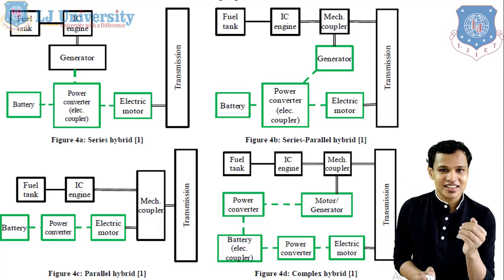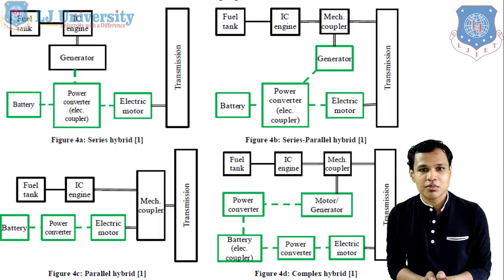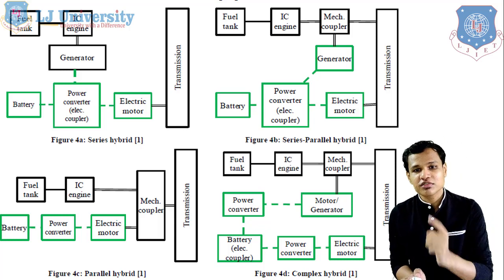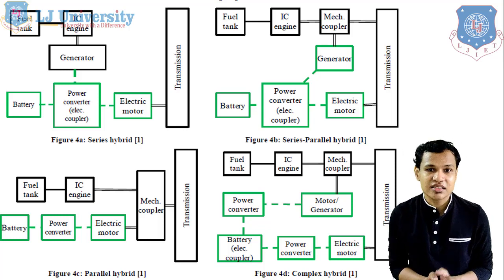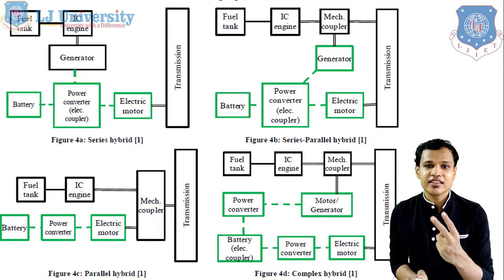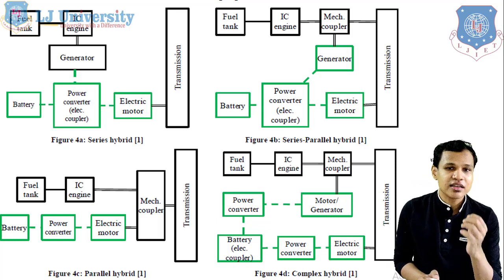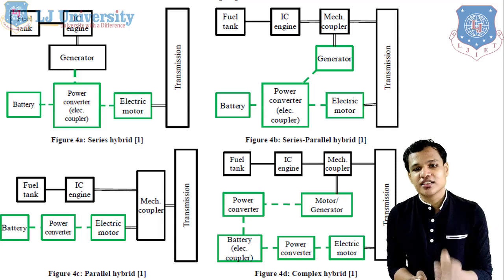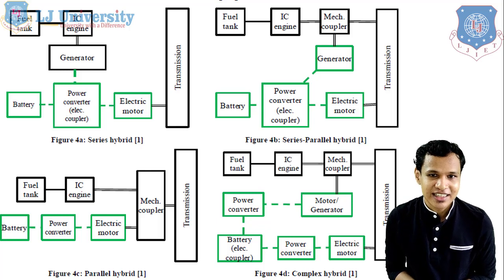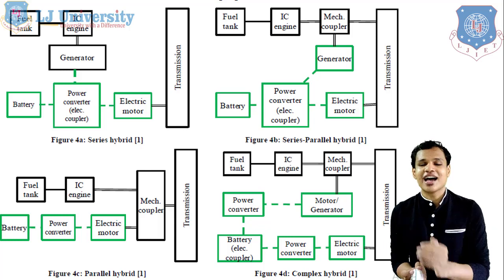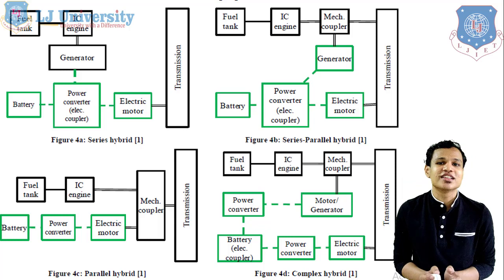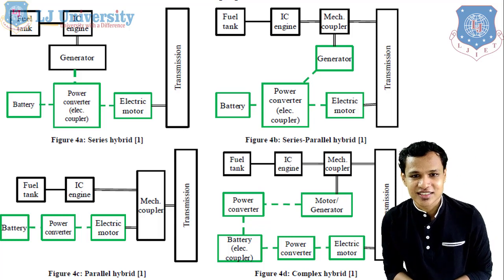So the preferred systems are: first, the series hybrid, which is preferred for heavy vehicles; and second, the parallel system, which is preferred for our four-wheelers. These are the basic four systems, of which two are practically used in our vehicles.